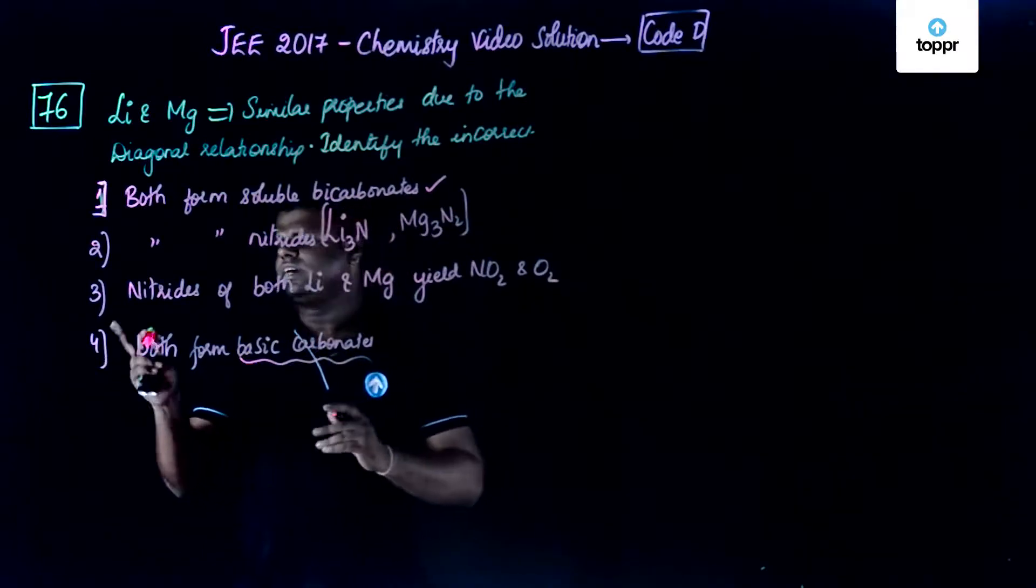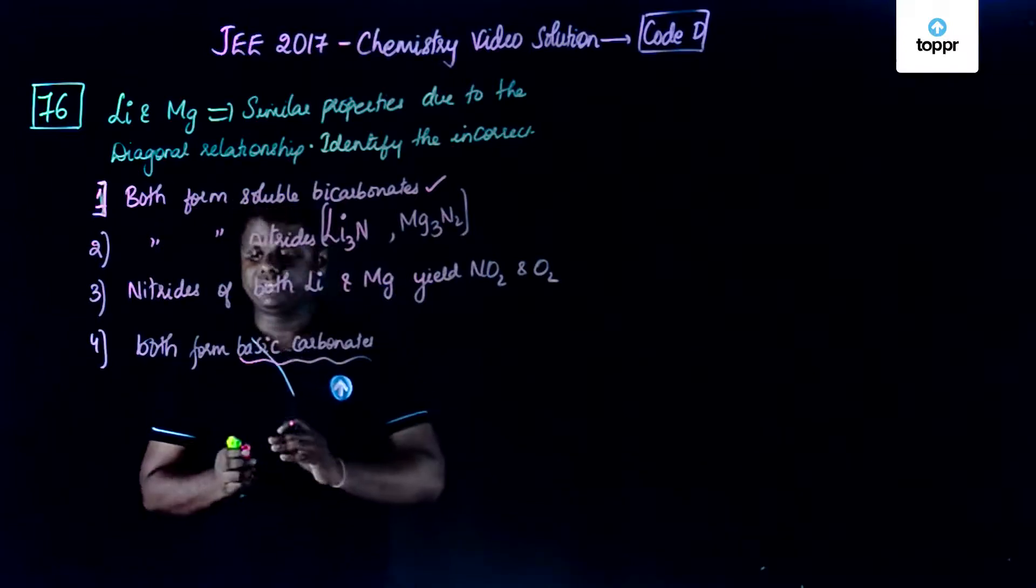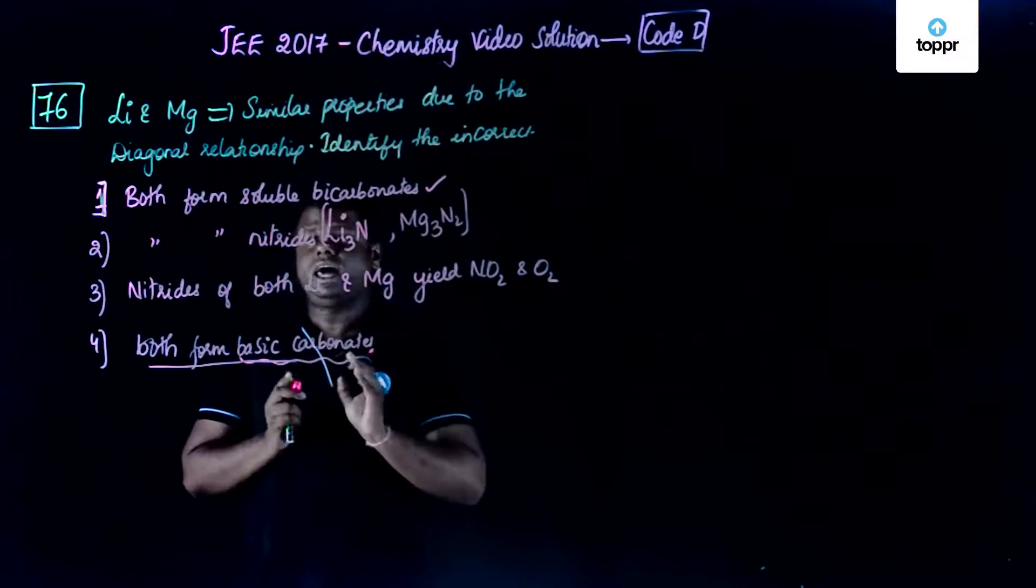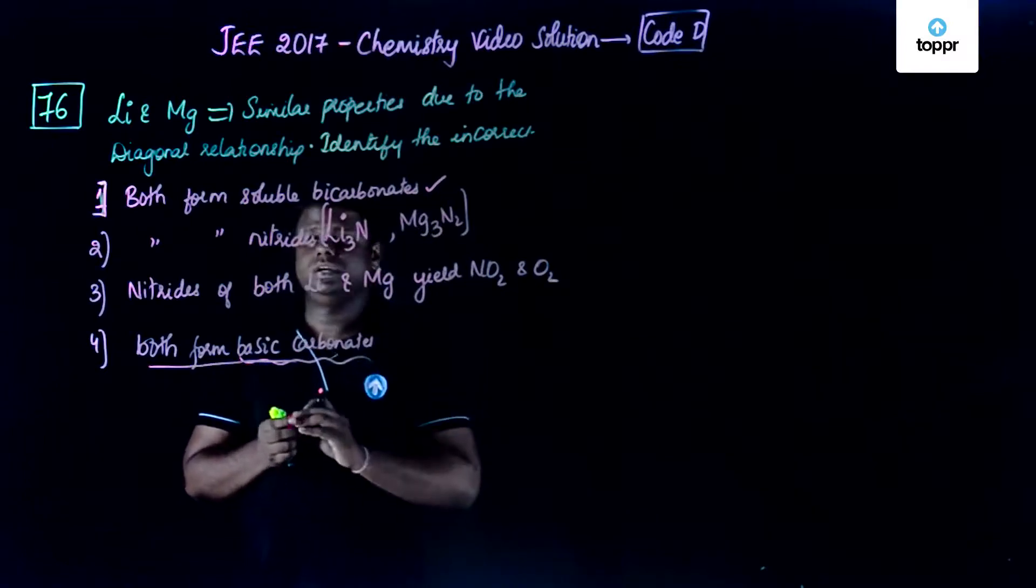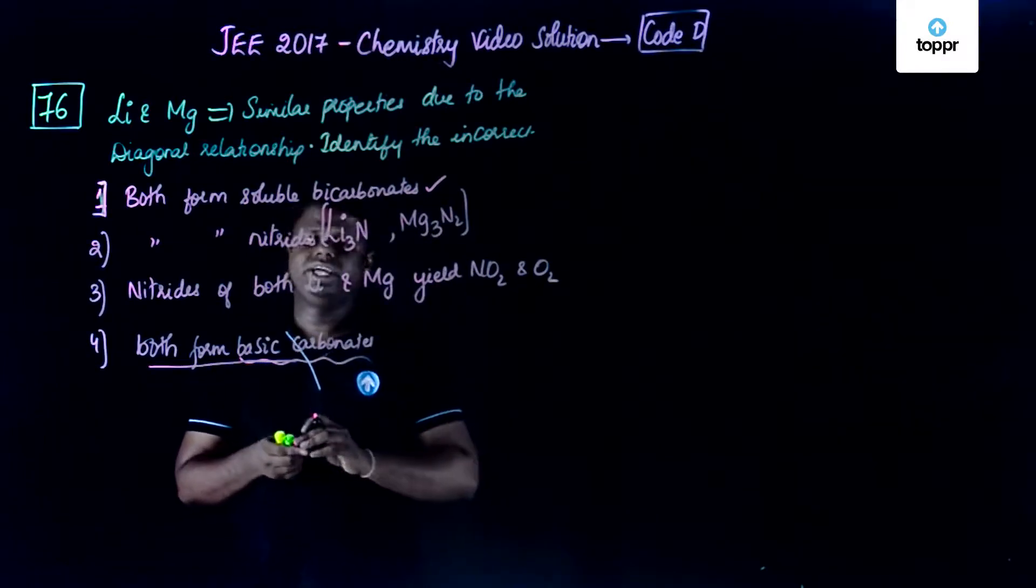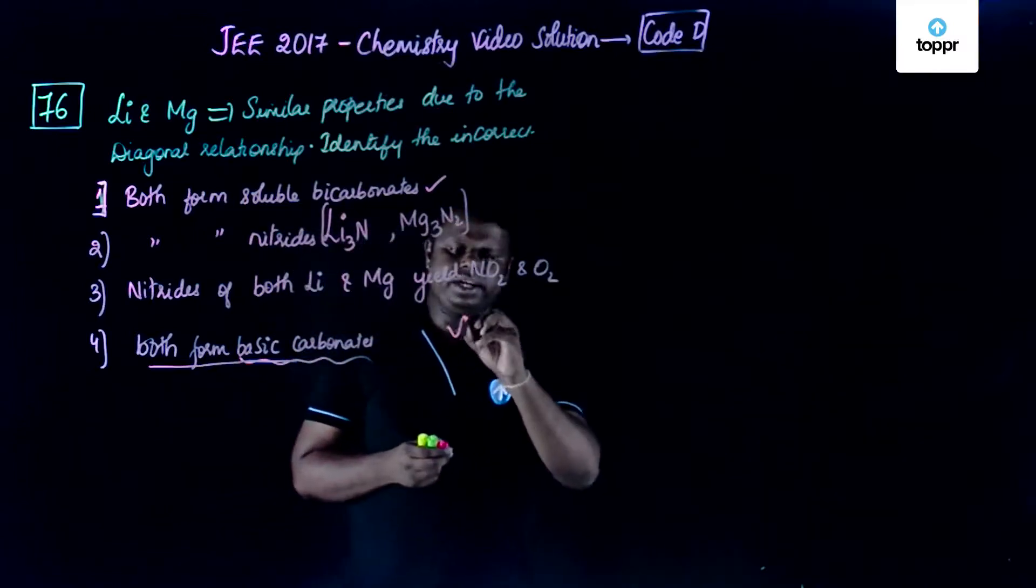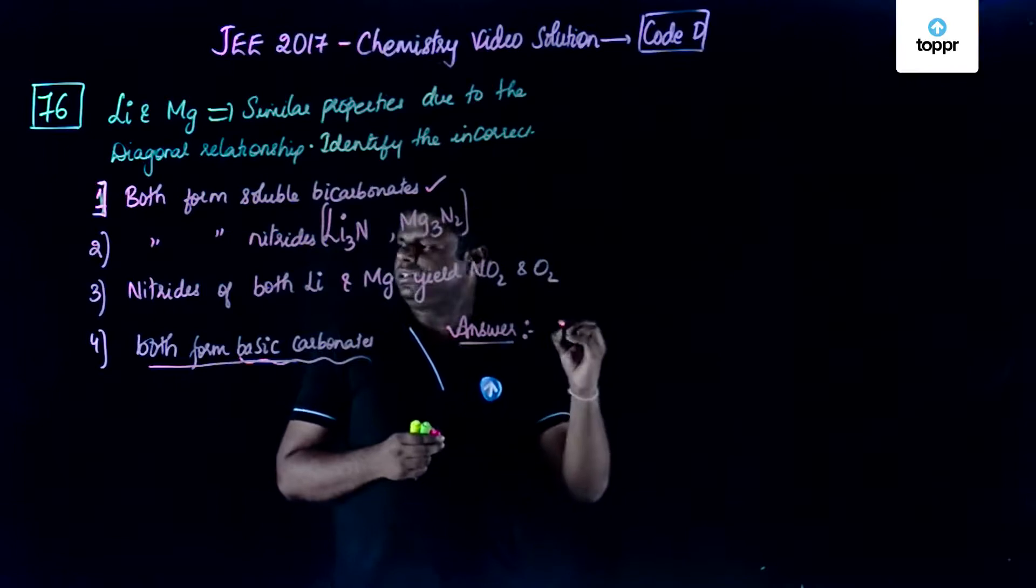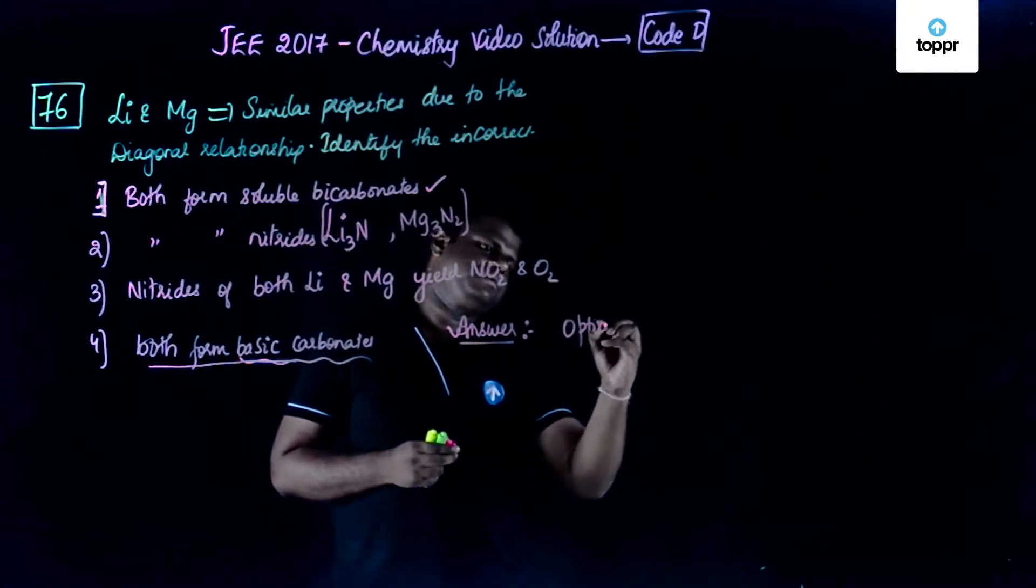So this is the correct option for this particular question, and this is the incorrect answer among all these diagonal relationship aspects. So the correct answer for this particular question is option number 4.